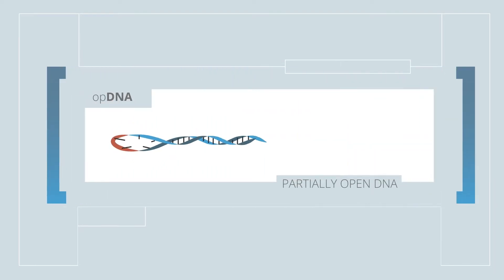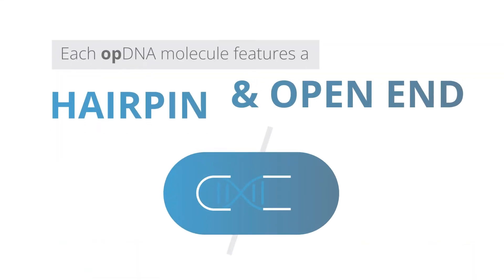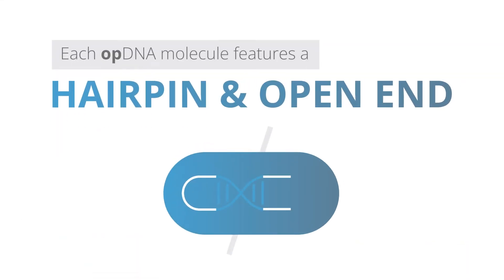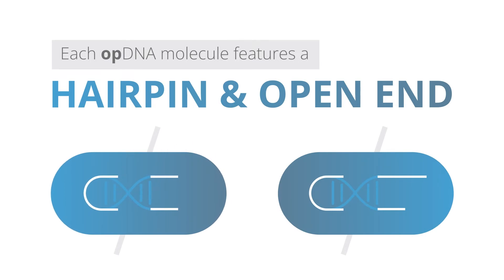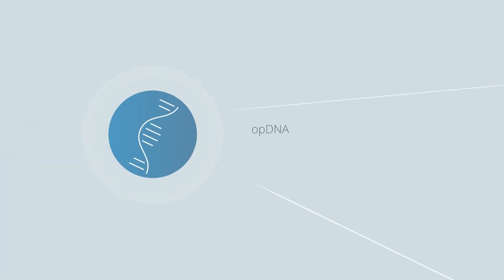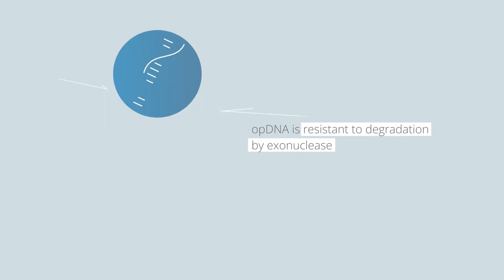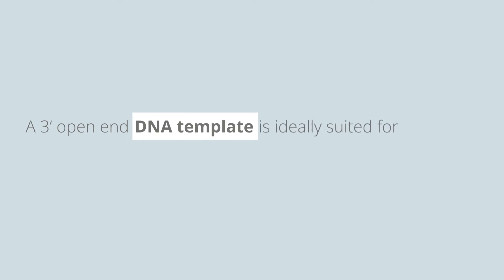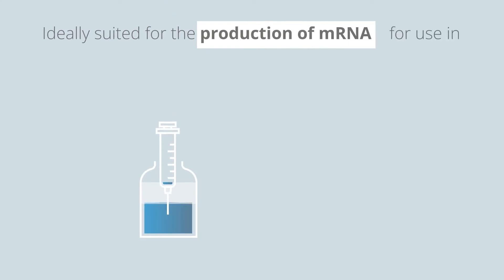OPDNA is a partially-opened, linear, double-stranded DNA product. Each OPDNA molecule features a hairpin on either the 3' or 5' end, with an opposite open end. The open end of the construct can include an overhang or blunt end, and like HPDNA, OPDNA is resistant to degradation by exonuclease. A 3' open end DNA template is ideally suited for in vitro transcription processes for the production of mRNA for use in vaccines and therapeutics.